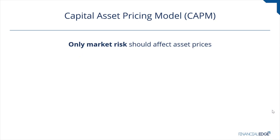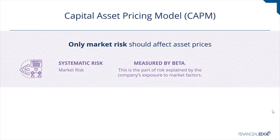CAPM is based on the idea that only market risk should affect asset prices — no other factors are considered. Systematic risk is a risk that cannot be avoided and is inherent in the overall market. It is non-diversifiable because it includes risk factors that are innate within the market and affect the market as a whole, i.e., interest rates, economic growth, etc.